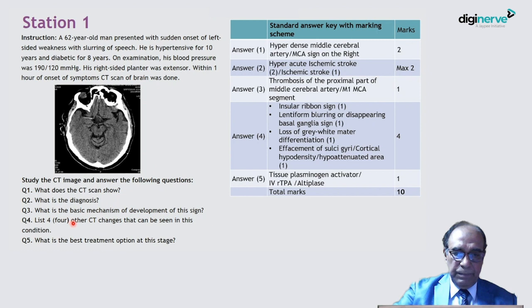Question 3: What is the basic mechanism development of this sign? This sign is due to thrombosis of the proximal part of the middle cerebral artery. Or you can write M1, that is proximal part M1 segment of the MCA, and you can get the full marks.